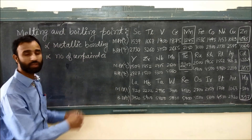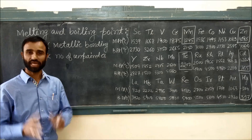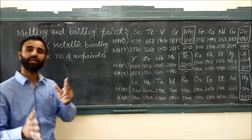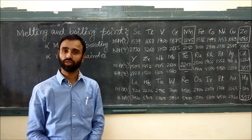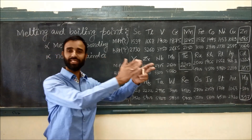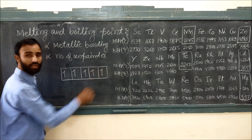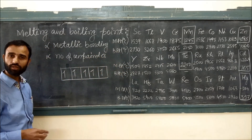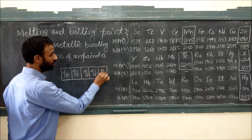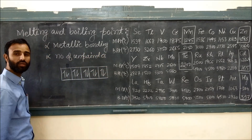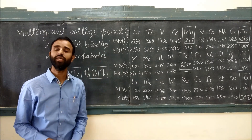So, a recap of the concept: melting and boiling point depends on metallic bonding, and metallic bonding in turn roughly depends on the number of unpaired electrons. First, the number of unpaired electrons increases, so melting and boiling point increases. Then pairing starts, the number of unpaired electrons decreases, so metallic bonding becomes weak and melting and boiling point decreases.